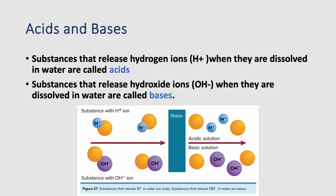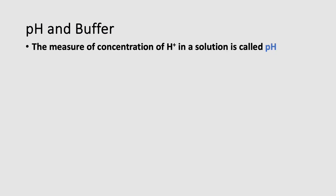Next we're talking about acids and bases. Substances that release hydrogen ions (H+) when dissolved in water are called acids; this lowers the overall pH of the solution. Substances that release hydroxide ions (OH-) when dissolved in water are called bases. A basic solution on the pH scale is anything from 7 to 14, while an acid is anything from 0 to 7. The measure of the concentration of hydrogen ions in the solution is called the pH, and the scale goes from 0 to 14.